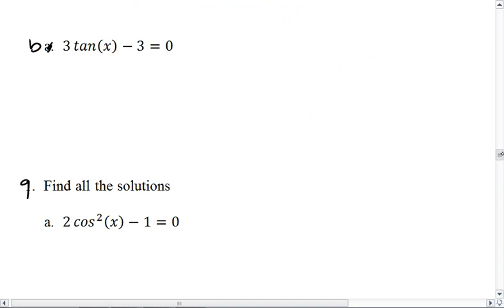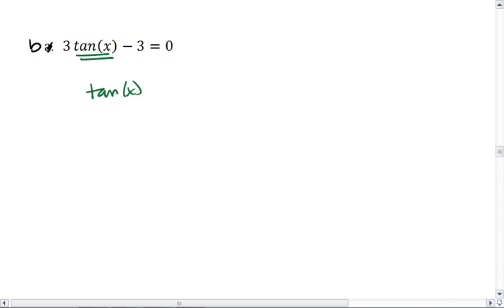Let's look at part B. Here, I want to know for 3tan(x) - 3 = 0. Again, I want to solve for tan of x, so I get 3 times the tan of x equals a positive 3. Tan(x) = 1, which means x = tan inverse of 1.